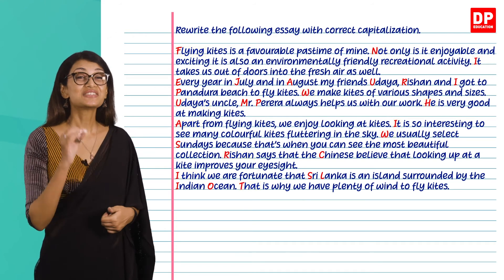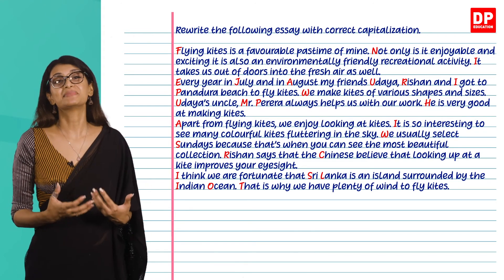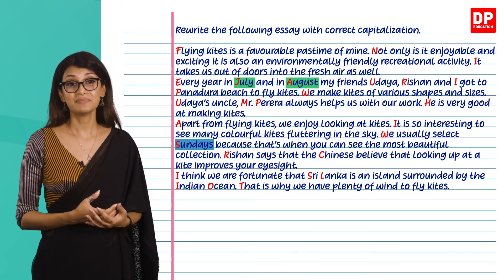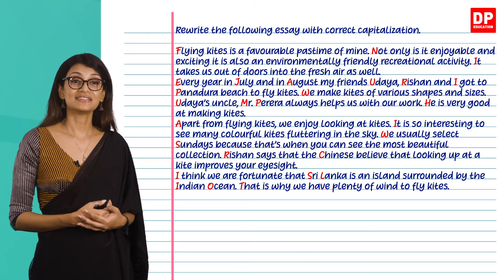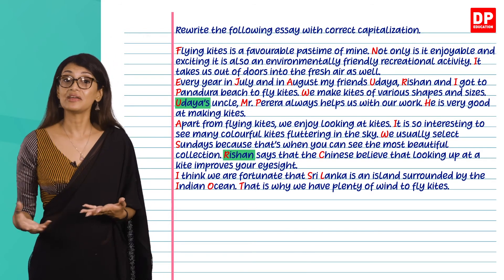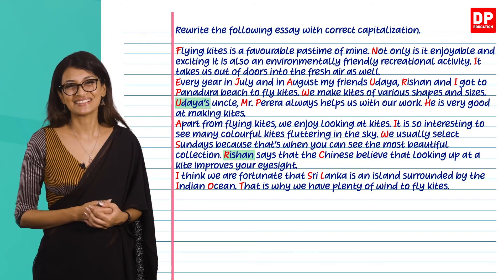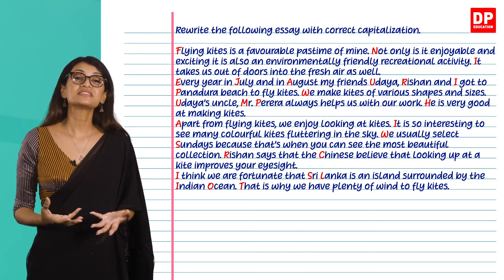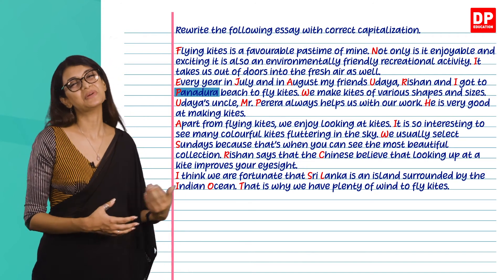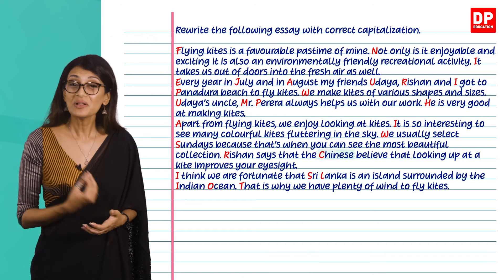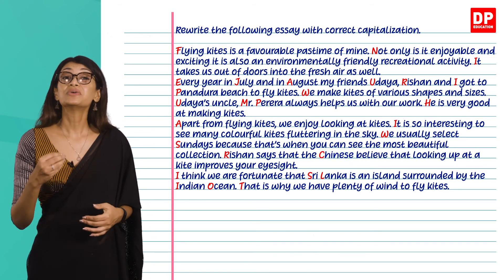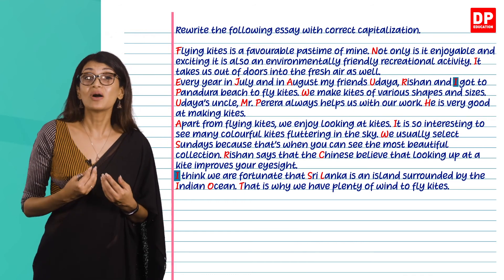The two words highlighted in green start with a capital letter because they are names of months — July and August. The word Sundays also starts with a capital letter because it's the name of a day. The words highlighted in green that are names of people — Udaya, Rishan, and the surname Pereira — are proper nouns and need to start with a capital letter. Similarly, names of places, also proper nouns, start with a capital letter — highlighted in blue. I have also capitalized names of nationalities: Chinese and Sri Lanka. The pronoun I has also been capitalized.